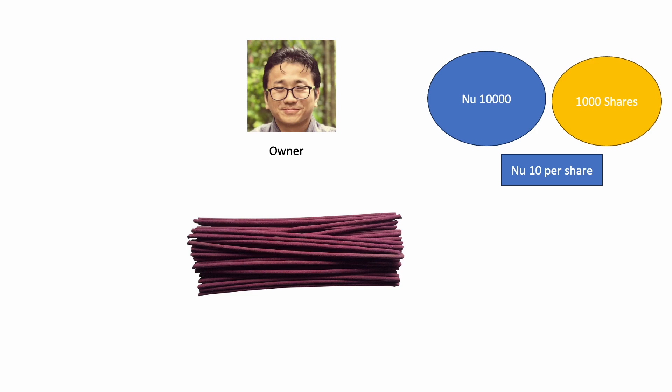If my company is worth Nu. 10,000 and I break it down into 1,000 shares, it will be easy to sell to many buyers — per share it will be Nu. 10. So if a person buys one share of my company, he'll be owning one one-thousandth of the company.